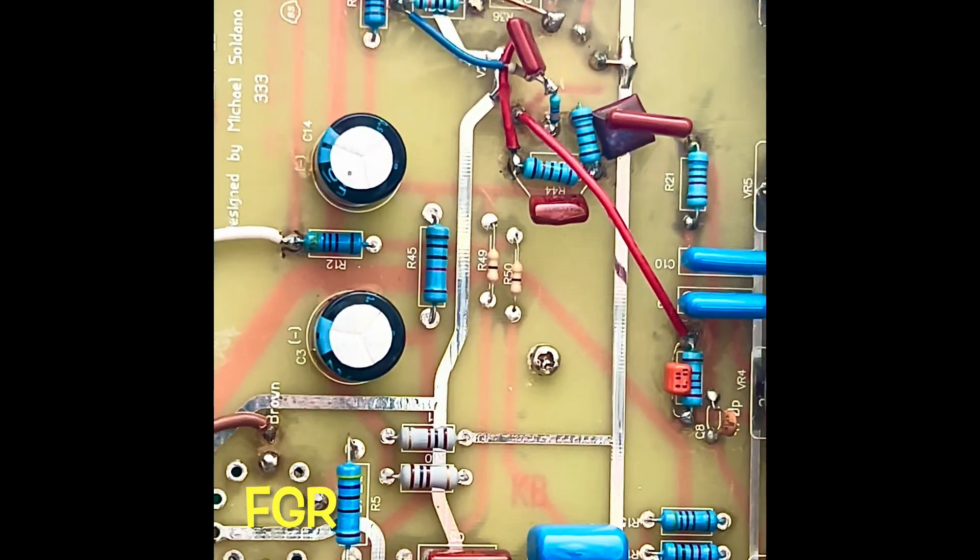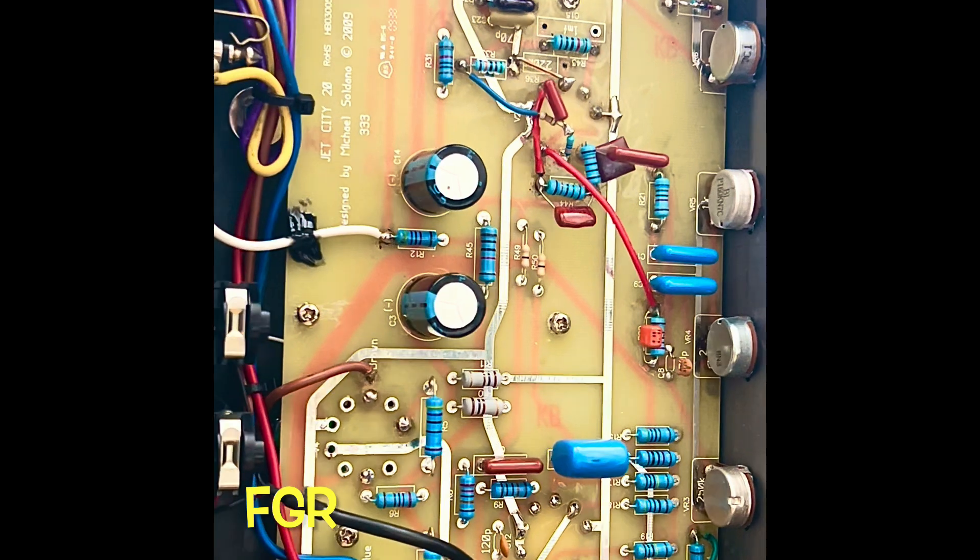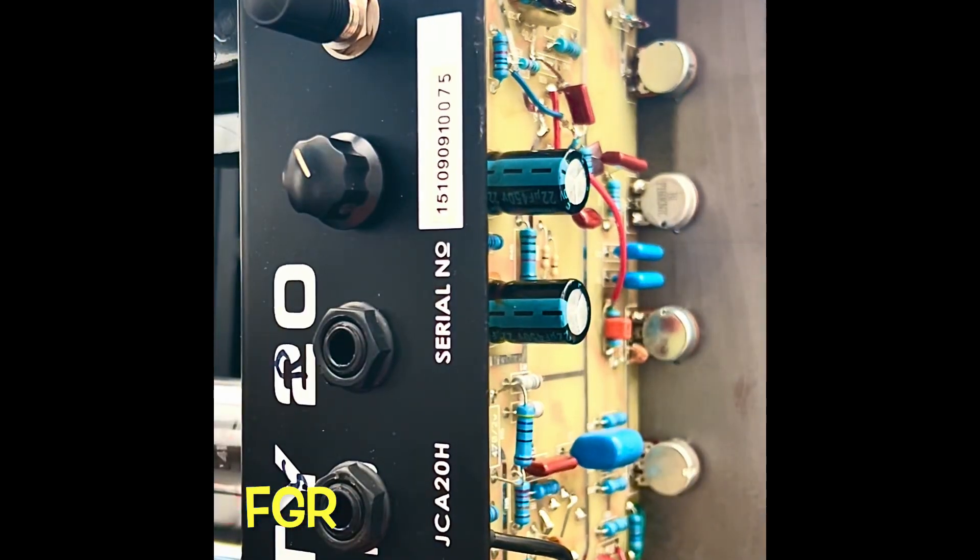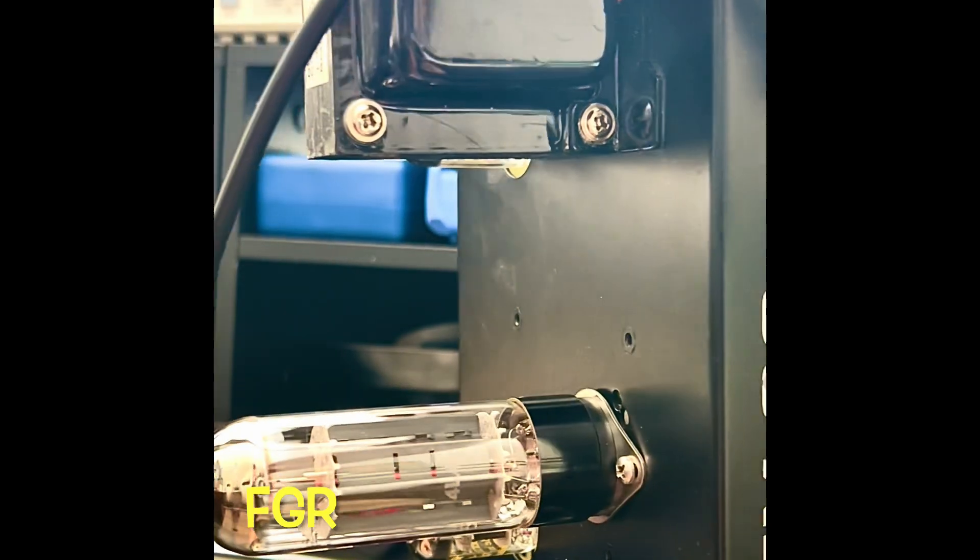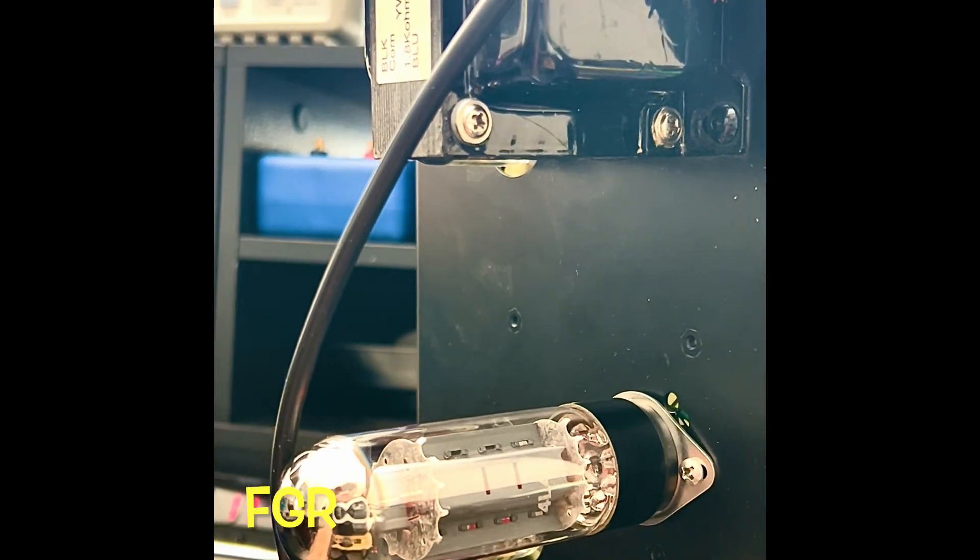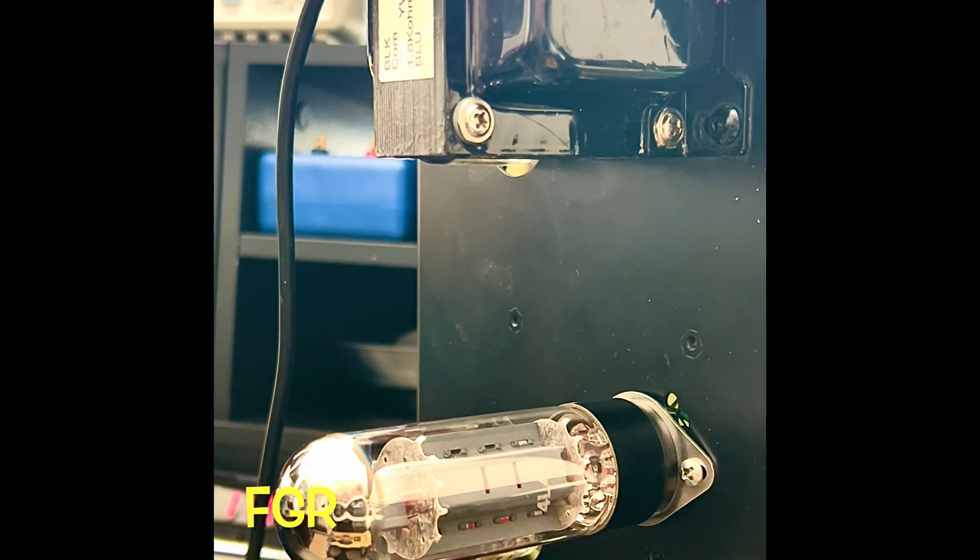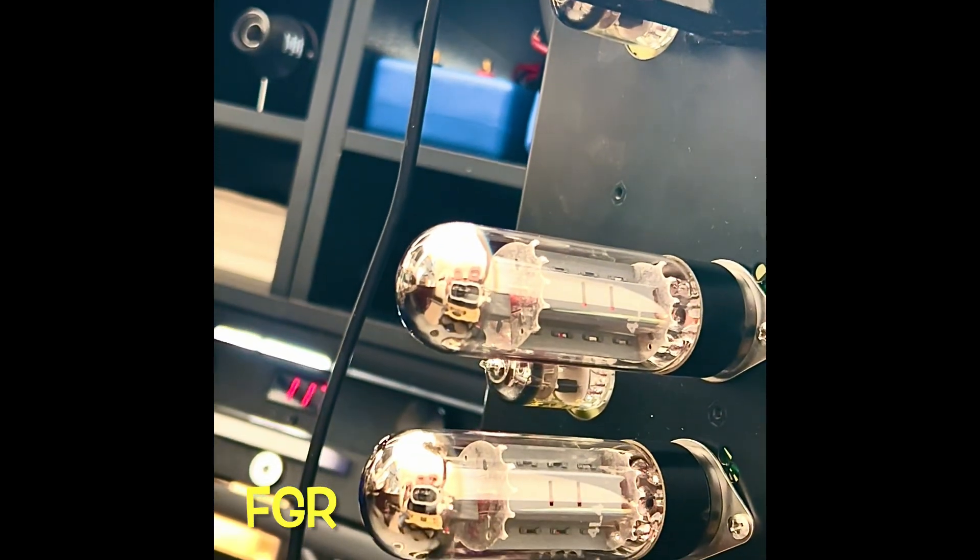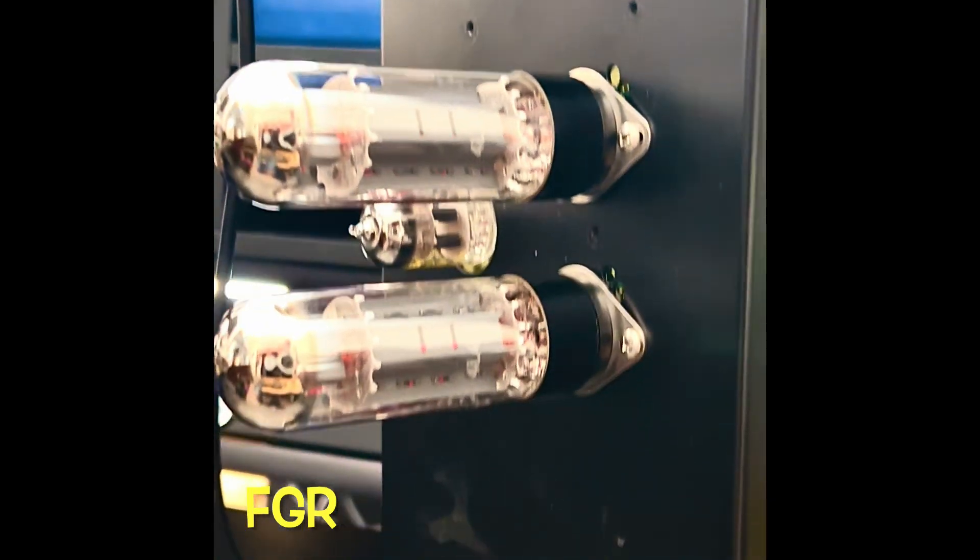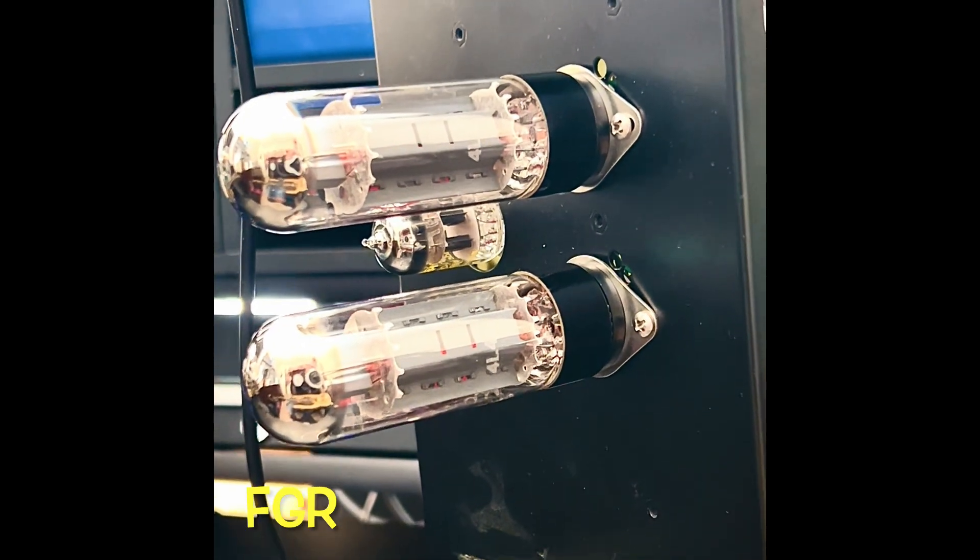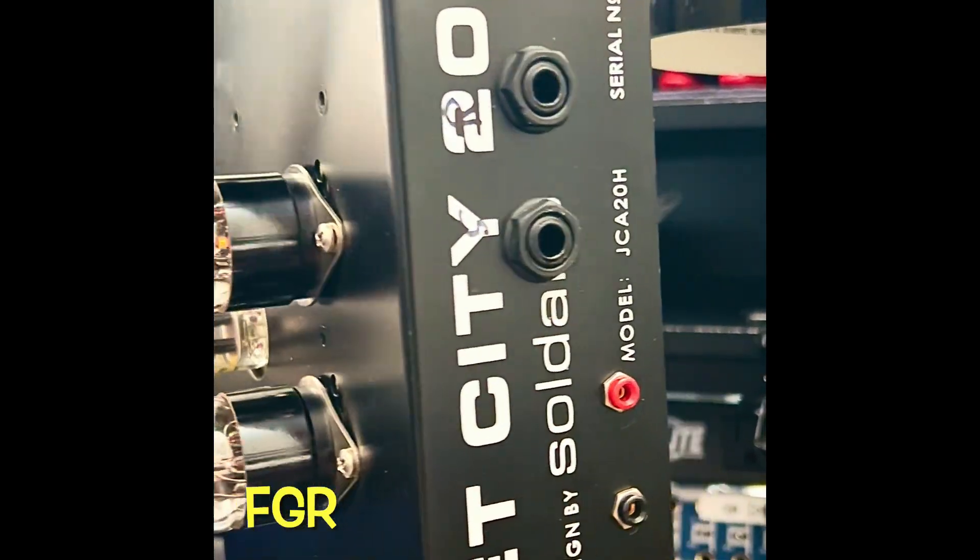Obviously I converted this over to an octal power section here. So whereas you were running 6BQ5s or EL84s, you're now running EL34s, some would say a proper power tube. Lovely, your test points there, I think they look pretty nice.